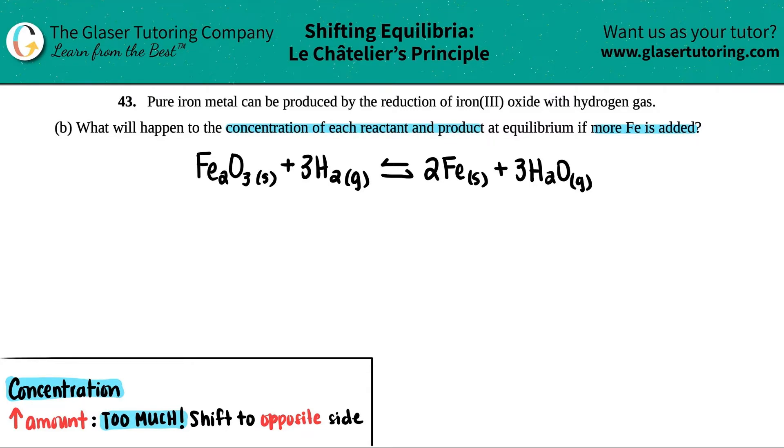Well, the first thing is to identify where this is coming from. In this case, we're adding more iron, so I'm scanning through the balanced equation and I'm adding more of this Fe solid - this is the iron.